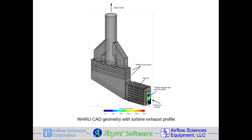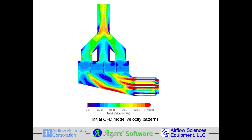In this case study, the turbine exhaust velocity profile was highly stratified, as seen in this figure. Initial CFD model results confirmed that the velocity patterns inside the unit were highly skewed through the silencer and significantly stratified as the hot turbine gases approached the tube bank.